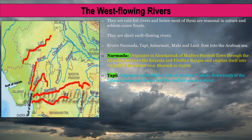The Tapi River is another West Flowing River. It originates in the Multai hills of Madhya Pradesh and flows south of the Satpura range, draining into the Arabian Sea near Surat.